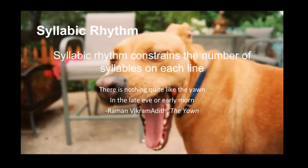You can use syllables to create rhythm by deliberately choosing the number of syllables in each line. Take a look at this snippet from one of my poems: 'There's nothing quite like the yawn and the late eve or early moan.' Each line contains eight syllables, creating a uniform rhythm. You don't always need to use the same number of syllables in each line — you could, for example, alternate between longer and shorter lines.